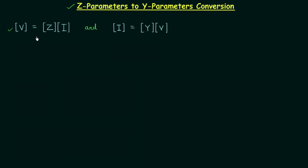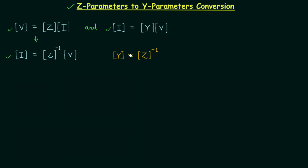From here we can say that the current matrix will be equal to the inverse of the impedance matrix multiplied by the voltage matrix. Comparing these two expressions, we find that the admittance matrix is equal to the inverse of the impedance matrix. So we get the result: admittance matrix equals the inverse of the impedance matrix.